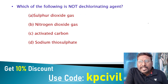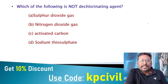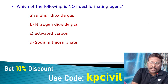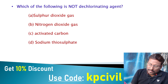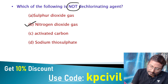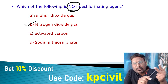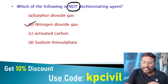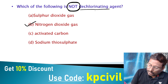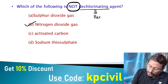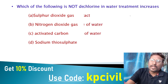Which of the following is not a dechlorinating agent? Nitrogen dioxide gas is not a dechlorinating agent. Sulfur dioxide, activated carbon, and sodium thiosulphate are all dechlorinating agents. Dechlorinating agents are chemicals used for the removal of chlorine from water.